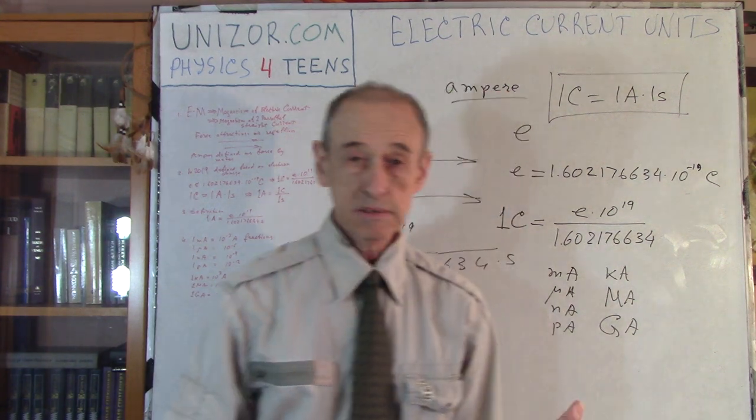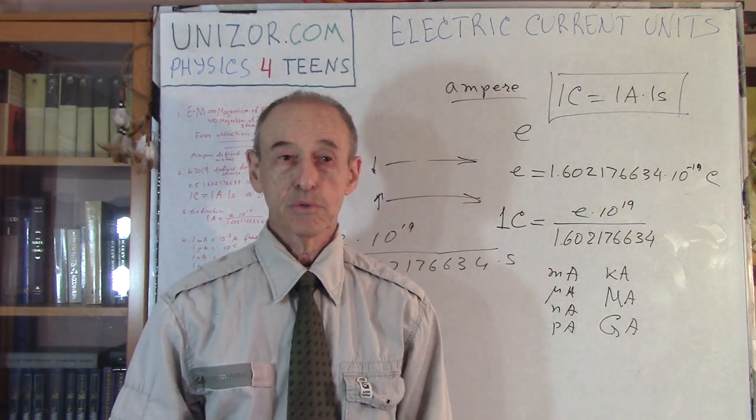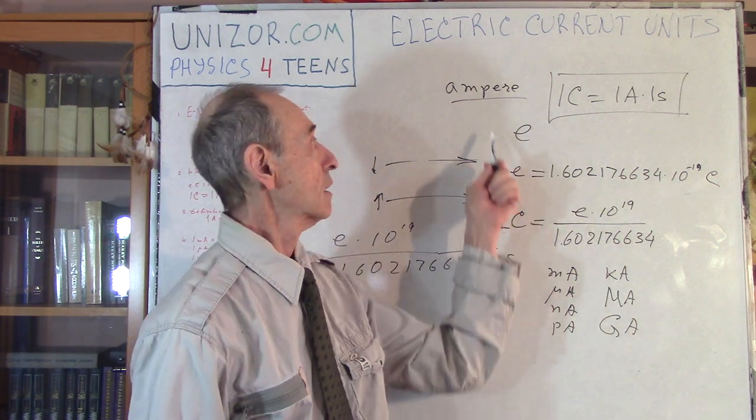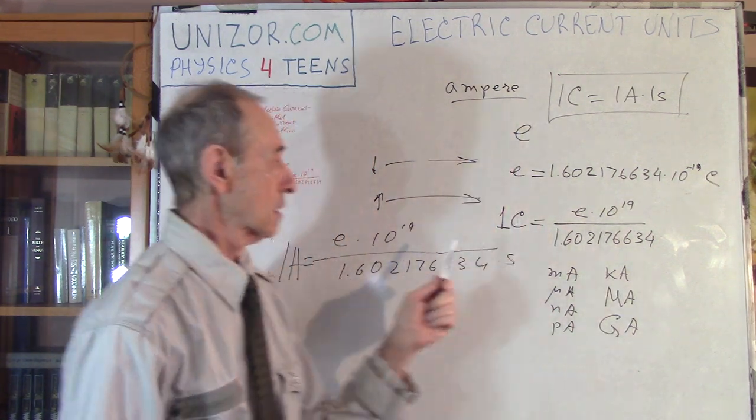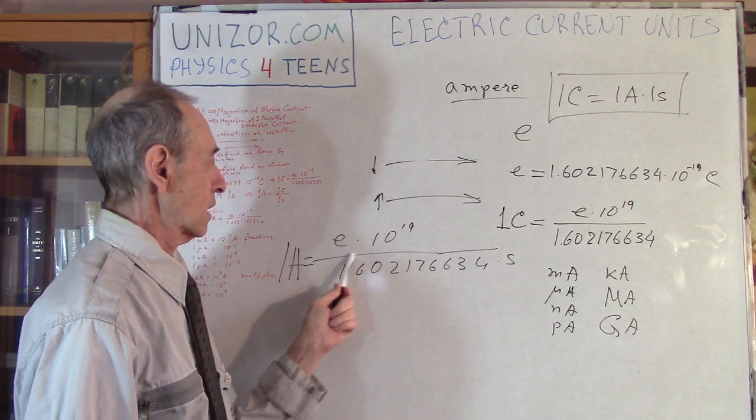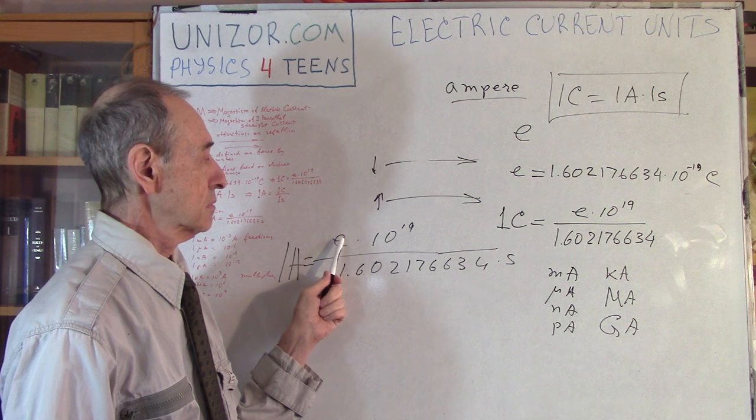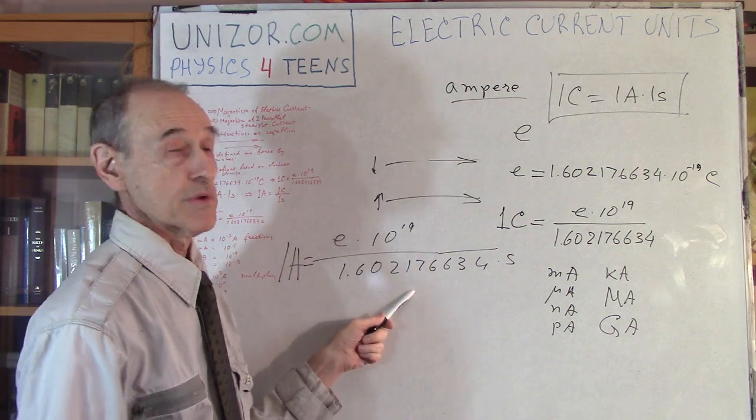So we have defined our electric current unit, which is ampere, using the amount of electricity in one electron, and some arithmetic.